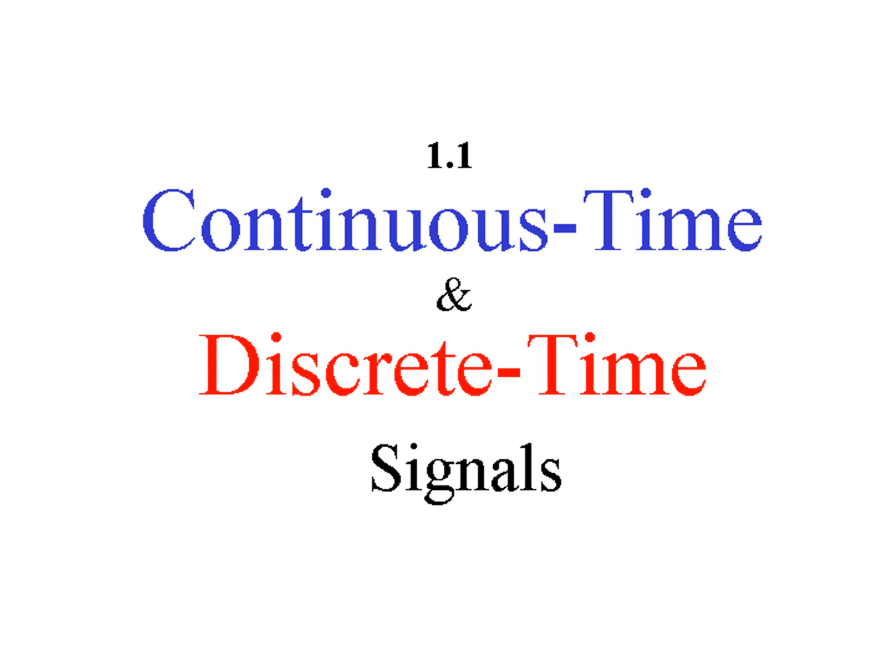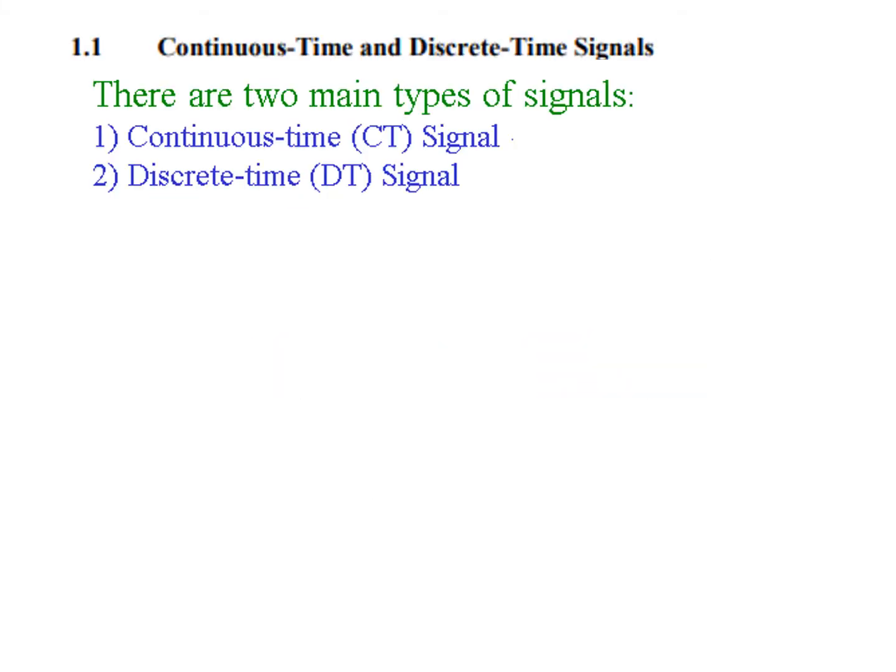Bismillahirrahmanirrahim. In this video we will learn the basics about continuous time and discrete time signals, and we will also solve end-chapter problem 1.1. We will be discussing the two main types of signals: continuous time, or CT signal, and discrete time, or DT signal.